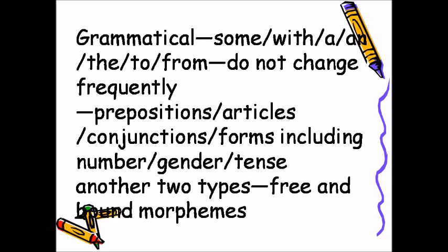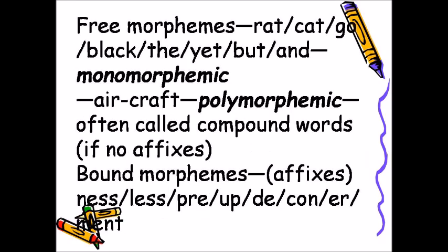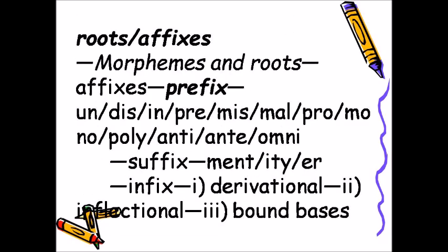Another two types: free and bound morphemes. Free morphemes — e.g., rat, cat, go, black, the, yet, but, and — can be monomorphemic or polymorphemic (often called compound words if no affixes). Bound morphemes are affixes, such as -ness, -less, pre-, up-, de-, con-, -er, -ment. Morphemes consist of roots and affixes.